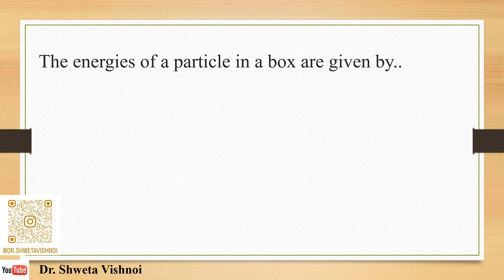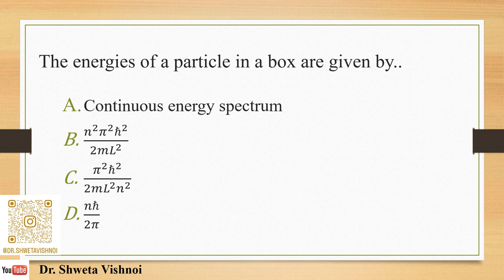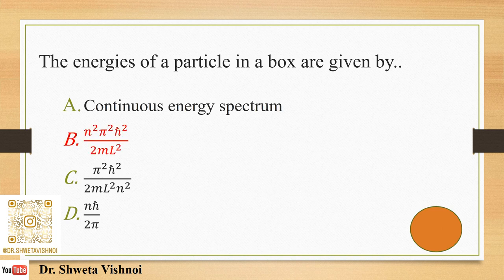Energies of a particle in a box are given by: (A) continuous energy spectrum, (B) N²π²ħ²/(2mL²), (C) π²ħ²/(2mL²), (D) N²ħ/(2π). This is the last question on particle in a box. The energy eigenvalue expression should be memorized. In terms of ħ: E = N²π²ħ²/(2mL²), option B. In terms of h: E = N²h²/(8mL²), since ħ = h/(2π) and the π² cancels.